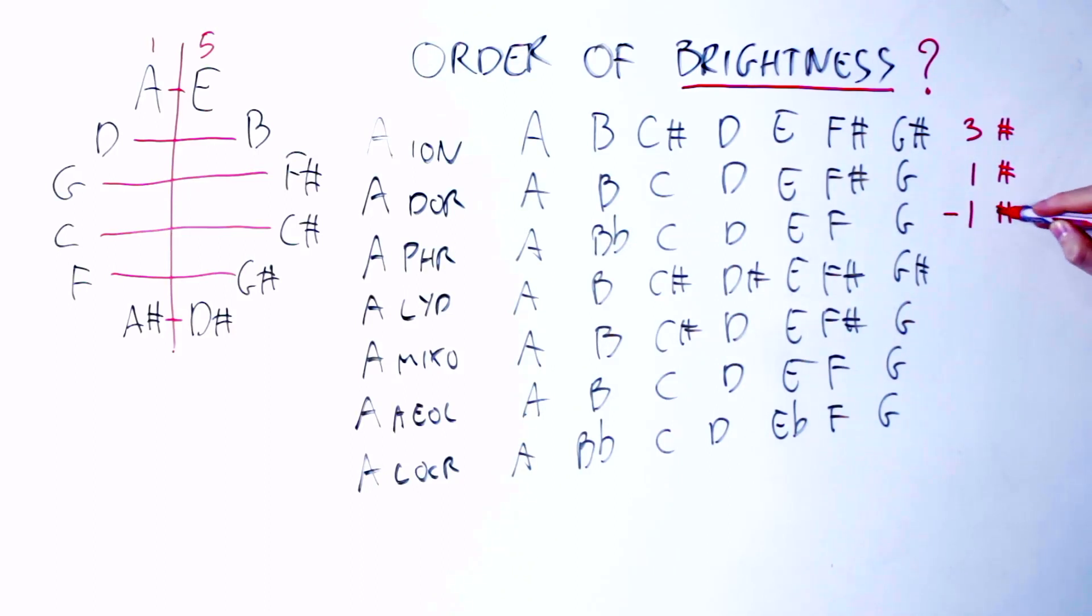Now, a flat here we count as negative sharps, so we have minus one sharps in A Phrygian. In Lydian I have four sharps, in A Mixolydian I have two sharps, in A Aeolian I have no sharps or flats so I have a zero, and in A Locrian I have two flats, so minus two sharps.